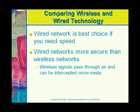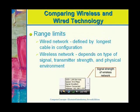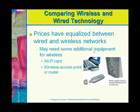Wired networks are also more secure than wireless networks. Because wireless signals pass through the air, you can actually pick up a wireless network from outside of a building. Wireless networks also have a range limit — it really depends on the strength of the signal and what environment you're in. At this day and time, the price between wired and wireless networks is pretty equal, with no significant difference when setting them up.